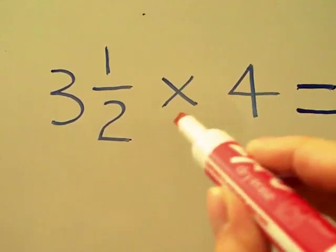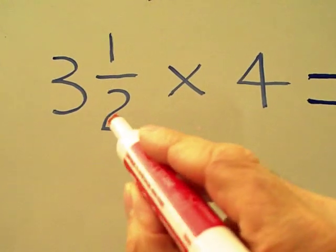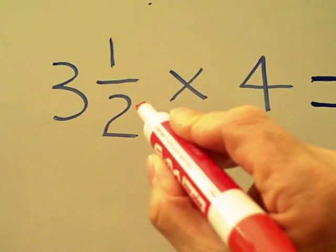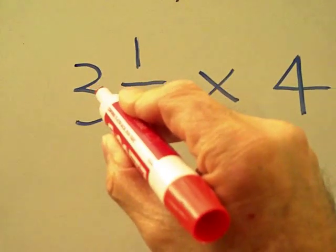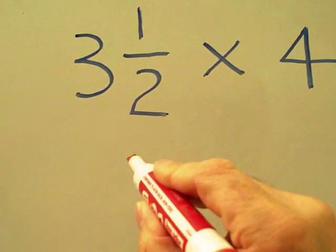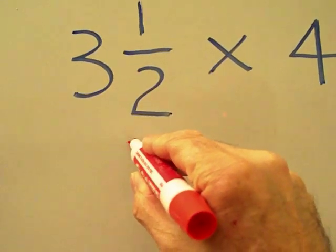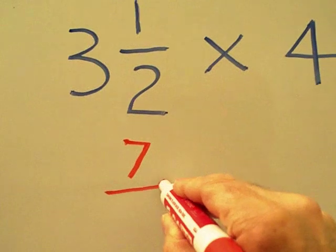The first thing we're going to do is change this mixed number into an improper fraction by multiplying the denominator by the whole number to get 6, adding 1 to get 7, and keeping our denominator of 2.